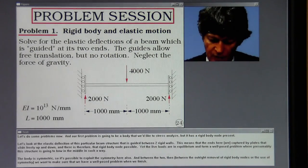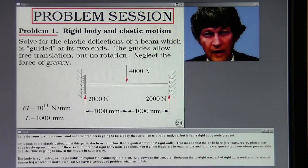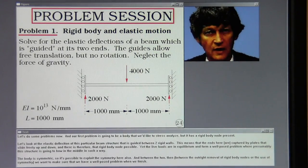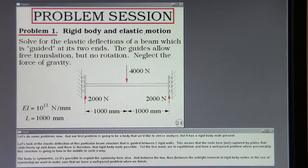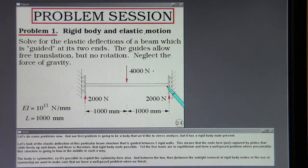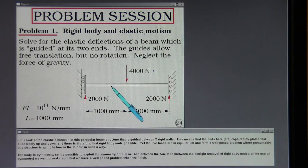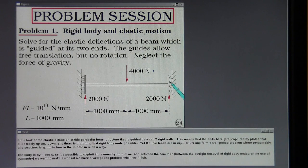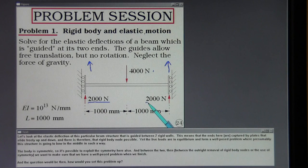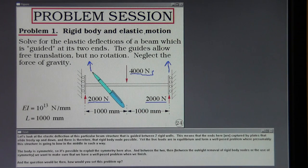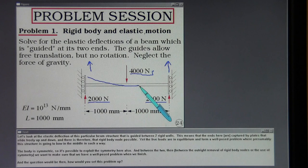Let's do some problems now. And our first problem is going to be a body that we'd like to stress analyze but it has a rigid body mode present. Let's look at the elastic deflection of this particular beam structure that is guided between two rigid walls. This means that the ends here captured by plates slide freely up and down. And there is therefore that rigid body mode possible. Yet the live loads are in equilibrium and form a well-posed problem where presumably this structure is going to bow in the middle in such a way.